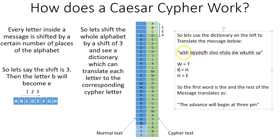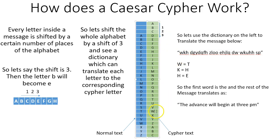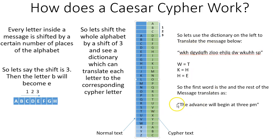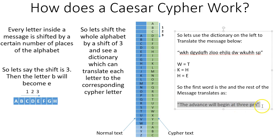Here we go. What does W, K, H mean? Well, here we have it. W in ciphertext means T, K means H, and H means E — the. The first word is 'the'. And if we do this for every single letter in this message, we are going to get something quite meaningful: 'The advance will begin at 3 p.m.'